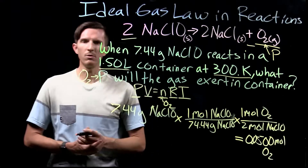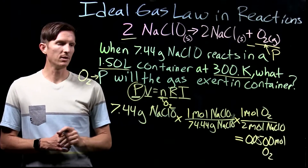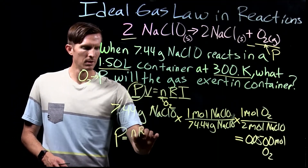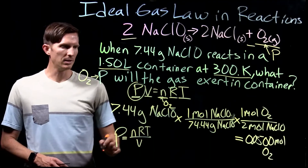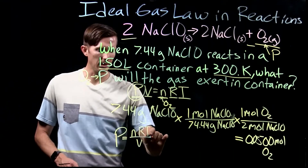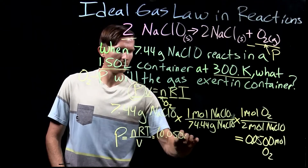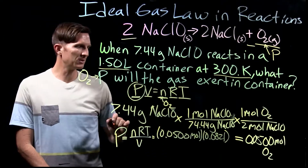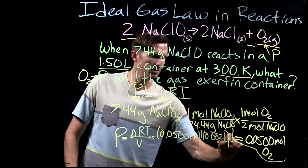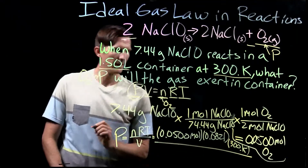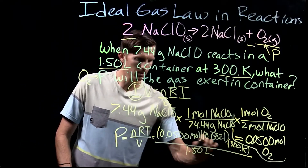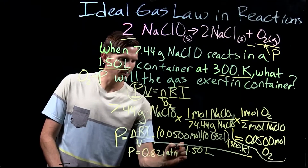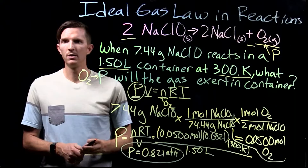Now we know the number of moles of our gas and can find the pressure. Rearranging the ideal gas law: P = nRT/V. Plugging in: 0.05 mol × 0.0821 L·atm/mol·K × 300 K, divided by 1.50 L. We find that the oxygen gas exerts a pressure of 0.821 atmospheres.